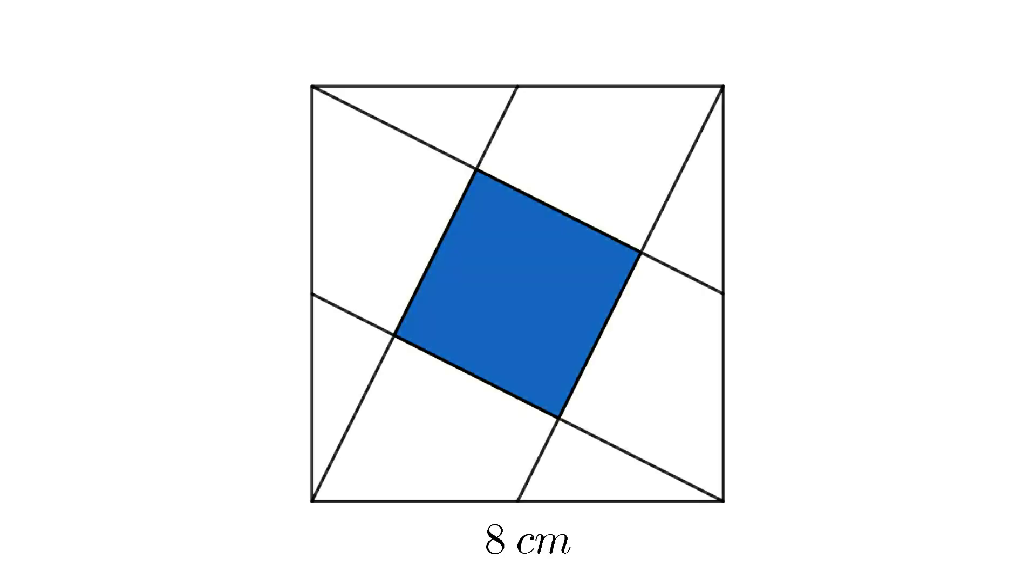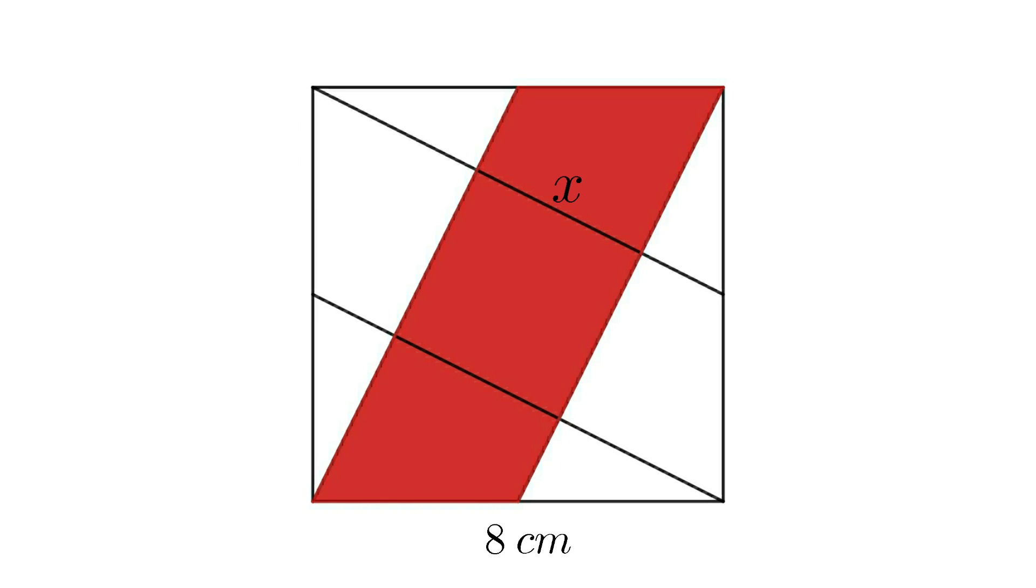Let's consider x as the side of the blue square. Consider the red parallelogram in the figure. We can find the area of the red parallelogram in two ways.